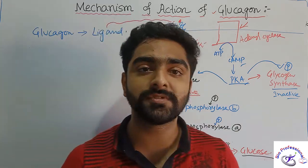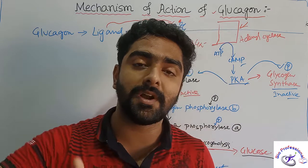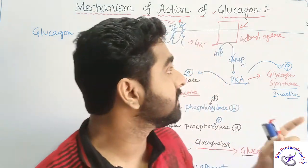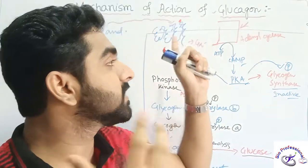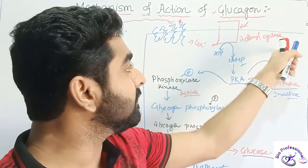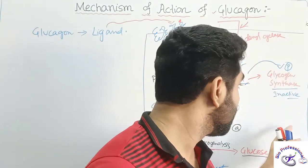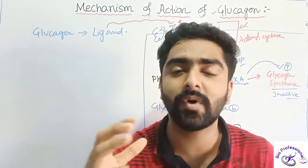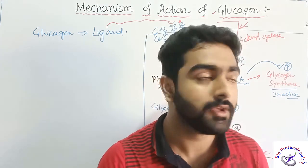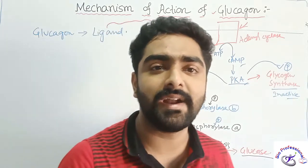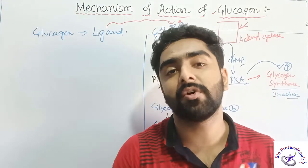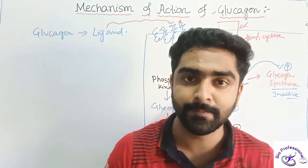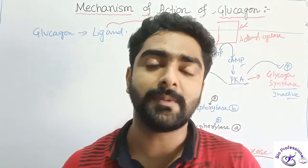Likewise, if the blood glucose level is very high, we need to decrease it — that is when insulin comes into action. The receptor for insulin is also present in the hepatocyte, but the insulin receptor is not a GPCR. In that case, glycogen synthase will become active and glycogen will be formed. We will see this in a subsequent lecture.